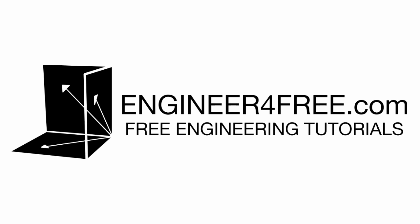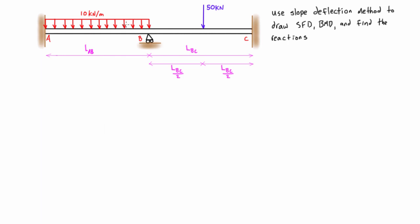We want to use the slope deflection method to draw the shear force diagram, bending moment diagram, and find the reactions to this statically indeterminate structure. Counting up the reactions, we have seven reactions but only three equations of equilibrium, so this beam is fourth-degree statically indeterminate. That would make it a beast to solve with the force method.